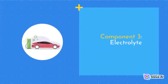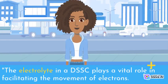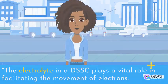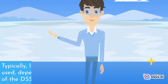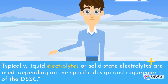Component 3: Electrolyte. The electrolyte in a DSSC plays a vital role in facilitating the movement of electrons. It acts as a redox mediator, regenerating the dye molecule to its original state for further light absorption. Typically, liquid electrolytes or solid-state electrolytes are used depending on the specific design and requirements of the DSSC.